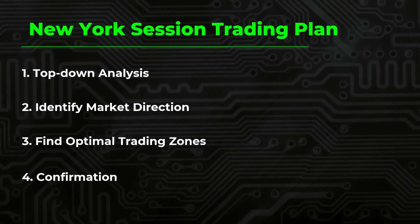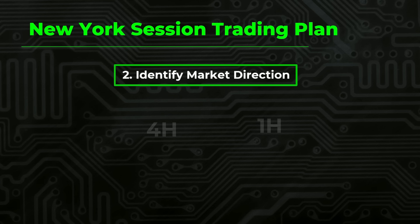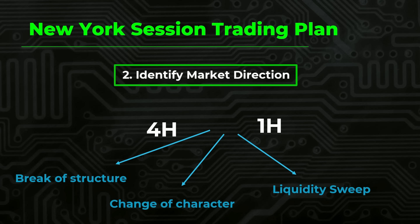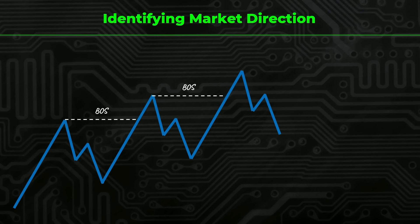Now that we have marked the higher timeframe key levels, it is time to identify the market direction in the second step. To find the direction, we only use two timeframes: the 4-hour and 1-hour chart. In this step, we apply the concepts of break of structure, change of character, and liquidity sweep pattern to find the overall direction. Trading along with the controlling side of the market will instantly improve your win rate and minimize losses. In the bullish scenario, the break of structure occurs when the price violates the highest point of the recent market structure, signaling continuation in the same bullish direction. But if the market fails to create a new high, that's the first sign of weakness. And if the price breaks below the swing low between two consecutive highs, we call it a change of character, which signals a possible reversal.